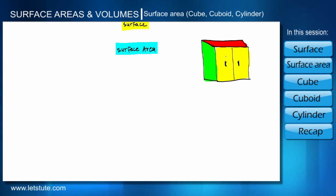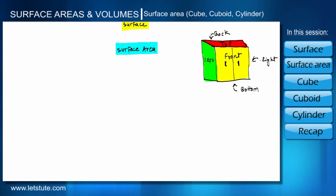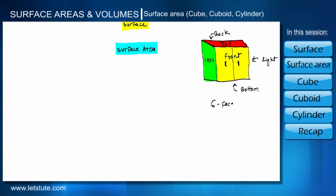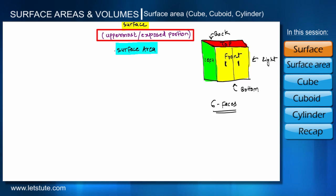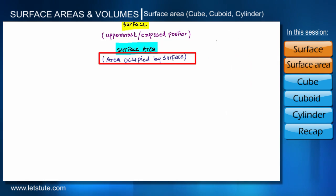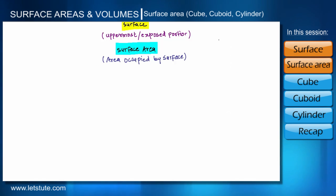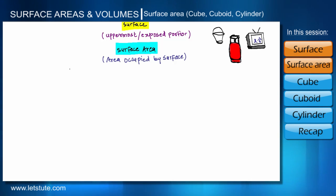In the example of this cupboard, we can see that we have painted it from six sides: front and back, top, bottom, left side, and right side — total six faces painted from outside. All these faces are called the surface of this cupboard. So the surface is the uppermost or exposed portion of any object, and the surface area is the area occupied by that surface. We are surrounded by such objects: bucket, TV, gas cylinder.